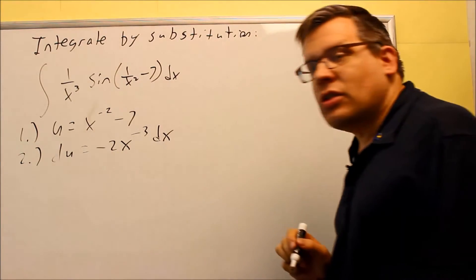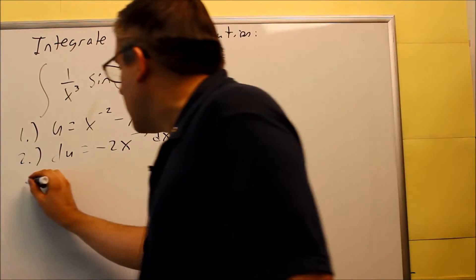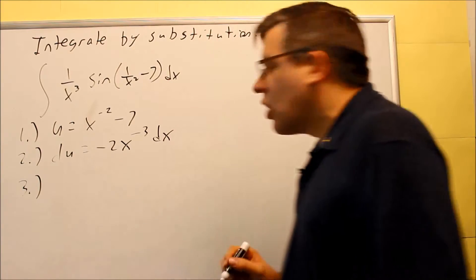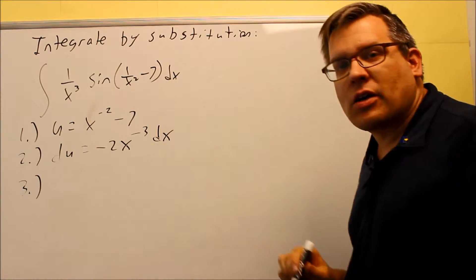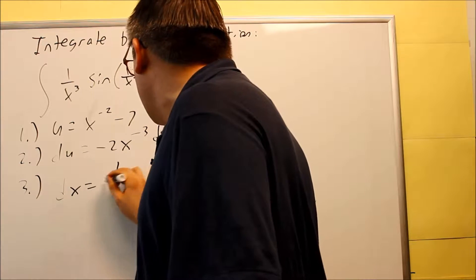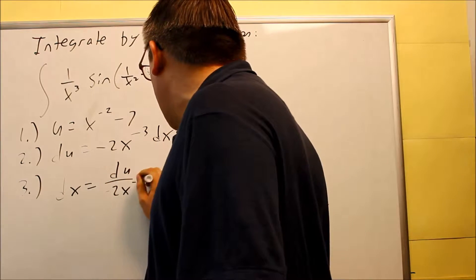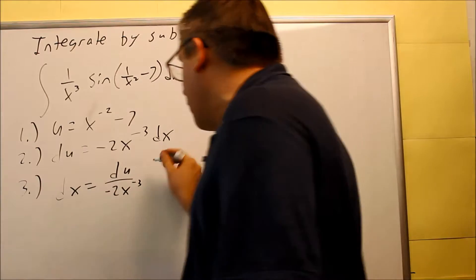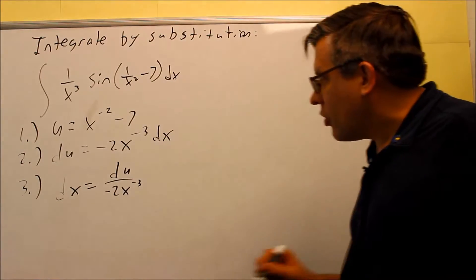For step 3, we need to solve for dx and substitute it back into our original one. So when we solve for this, we get dx is equal to du over negative 2x to negative 3.